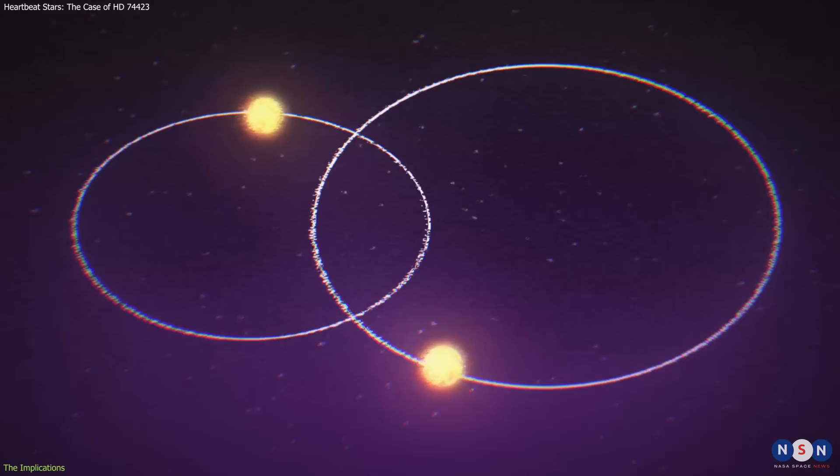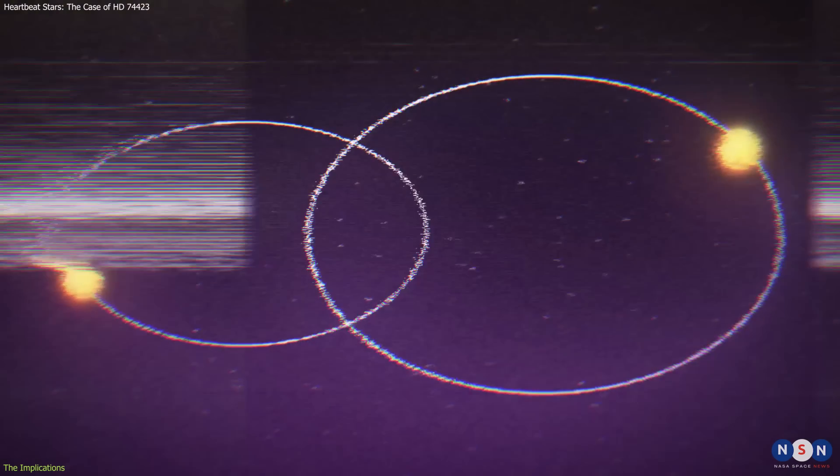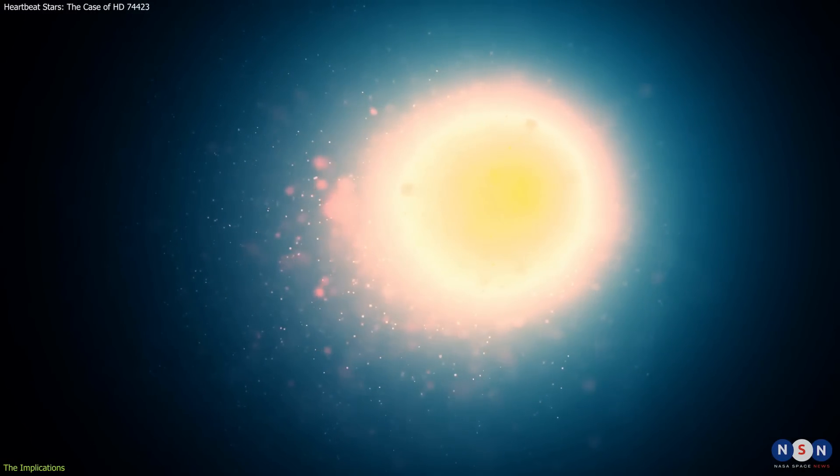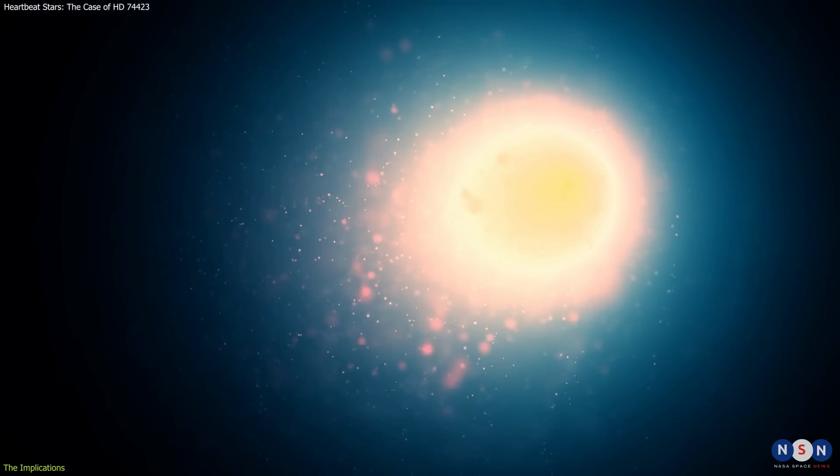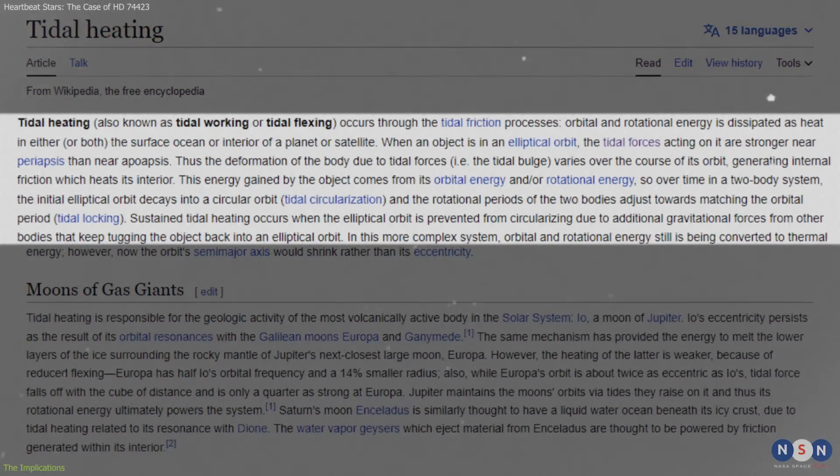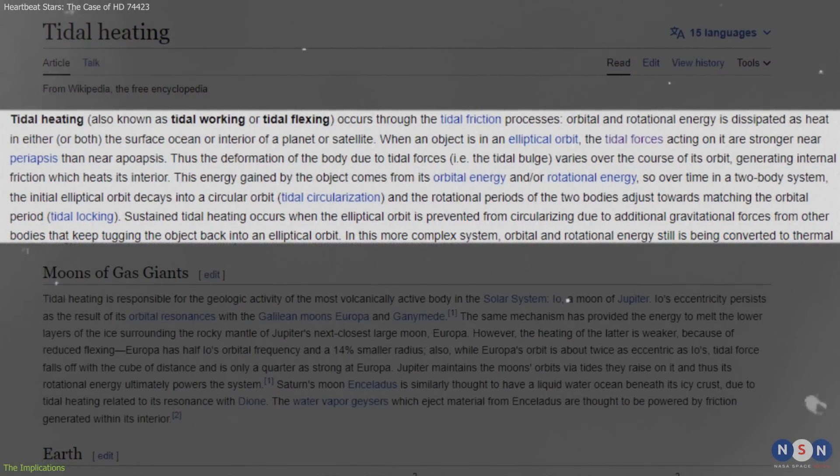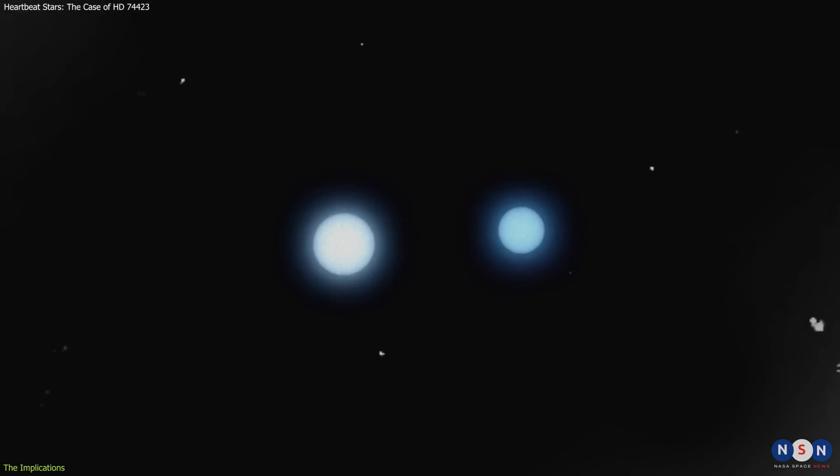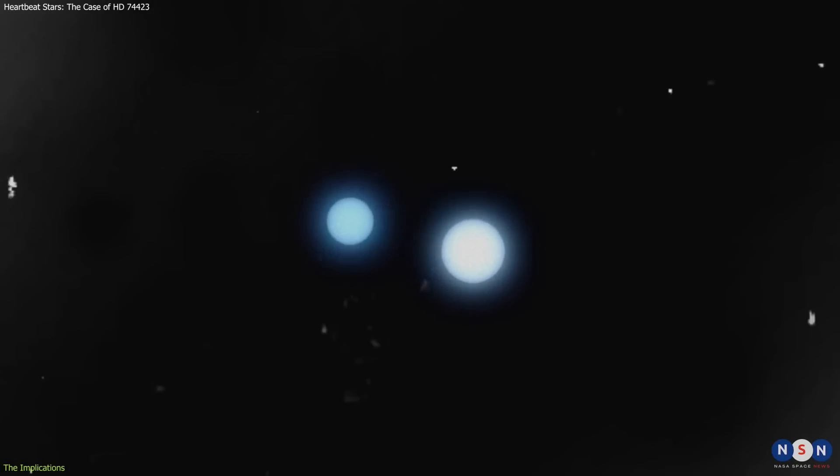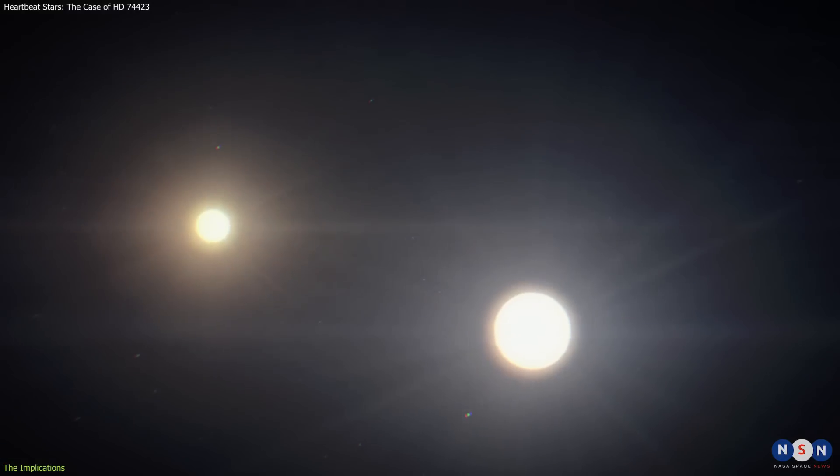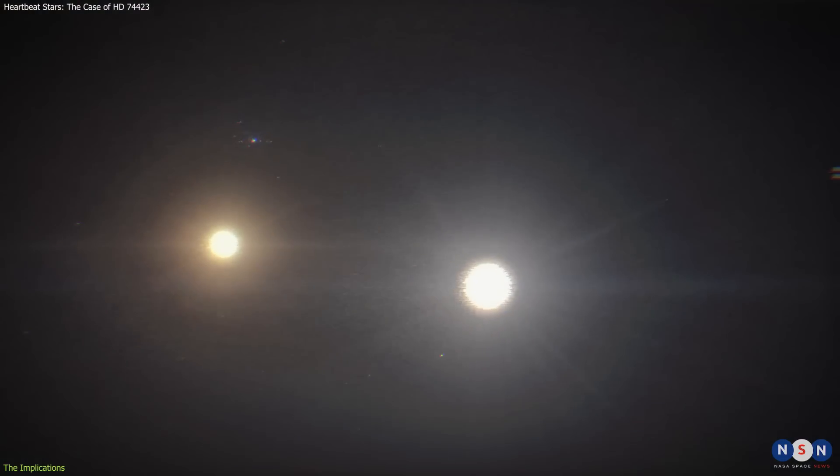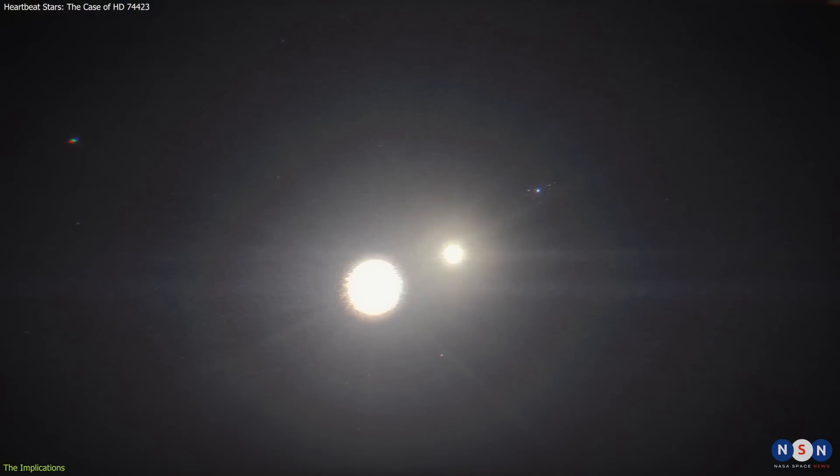For example, why do they have such eccentric orbits and how do they avoid becoming more circular over time due to tidal dissipation? Tidal dissipation is the process by which the gravitational energy of the orbit is converted into heat and radiated away, reducing the orbital angular momentum and making the orbit more circular. This is expected to happen in any binary system with tidal interactions, especially when the stars are close to each other.